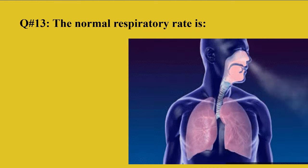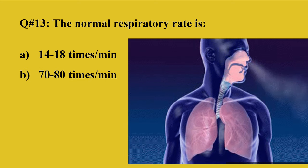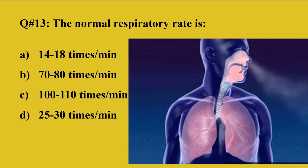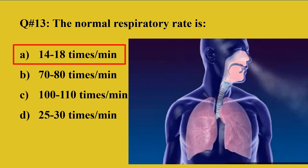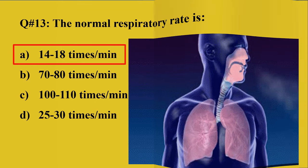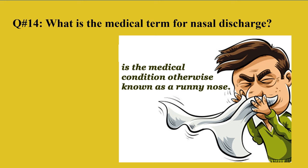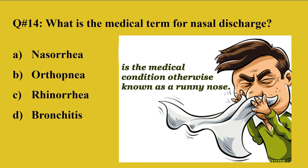Question 13: The normal respiratory rate is A: 14 to 18 times per minute, B: 70 to 80 times per minute, C: 100 to 110 times per minute, D: 25 to 30 times per minute. The right option is A — the normal respiratory rate in humans is 14 to 18 times per minute. Question 14: What is the medical term for nasal discharge? The medical term for runny nose or nasal discharge is rhinorrhea.